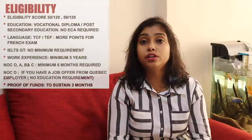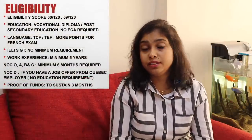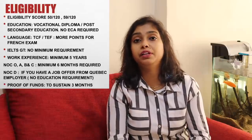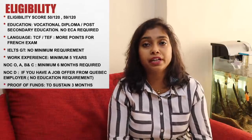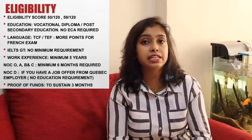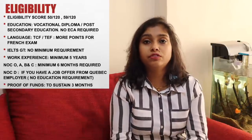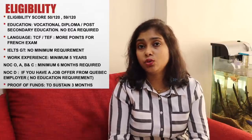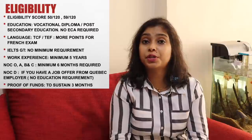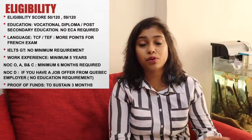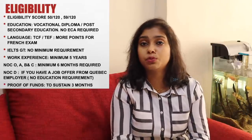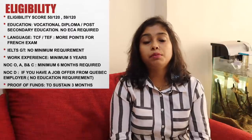Now let's talk about eligibility. You are given points out of 120. If you are a single applicant your eligibility score is 50, and if you are immigrating with your spouse it is 59. Regarding education requirements, even if you have a post-secondary diploma or a vocational diploma you are eligible to apply, and no ECA is required. If you have all required documents for your language and work experience, you can apply right now.